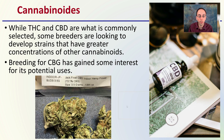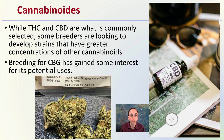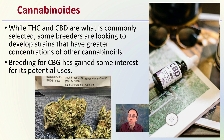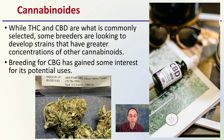Then there's cannabinoids. THC and CBD are what is commonly selected for, but some breeders are now looking into developing strains with greater concentrations of other cannabinoids. In particular, breeding for CBG has gained some interest for its potential uses — just another consideration that goes beyond THC and CBD when looking at breeding and finding a genetic standout.